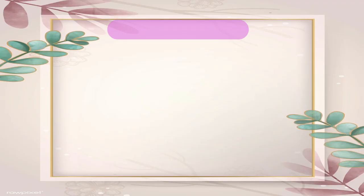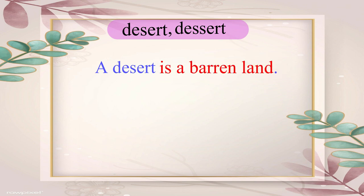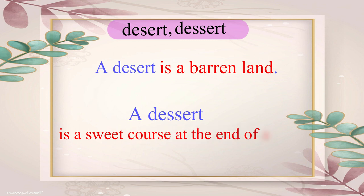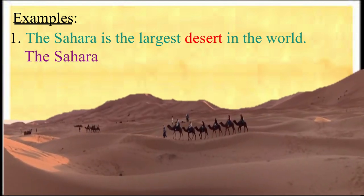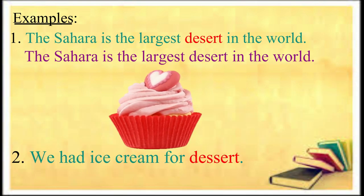The words DESERT and DESSERT have the same sounds but different spellings and meanings. A DESERT (D-E-S-E-R-T) is a barren land, whereas a DESSERT (D-E-S-S-E-R-T) is a sweet course at the end of a meal. The Sahara is the largest desert in the world. We had ice cream for dessert.